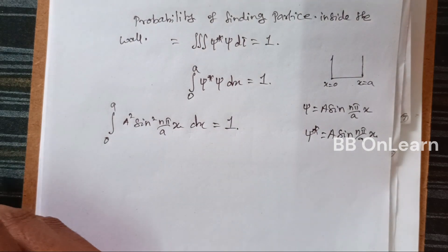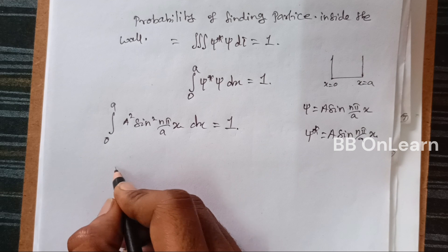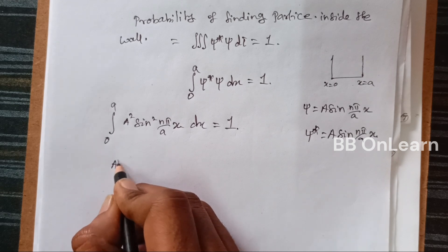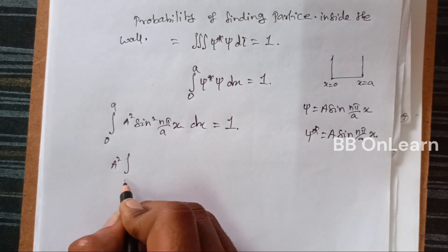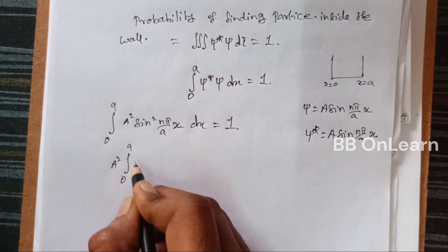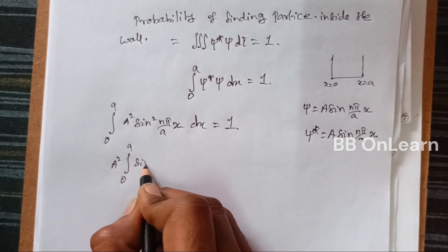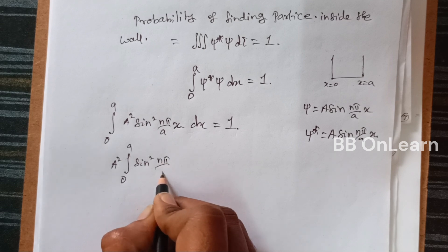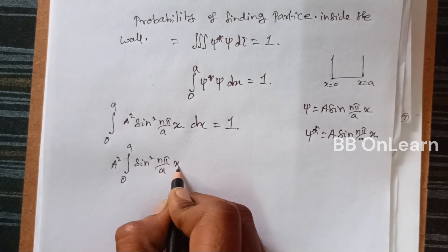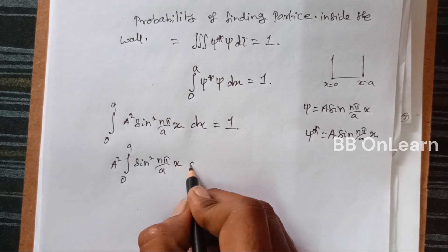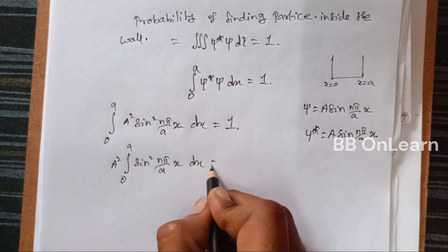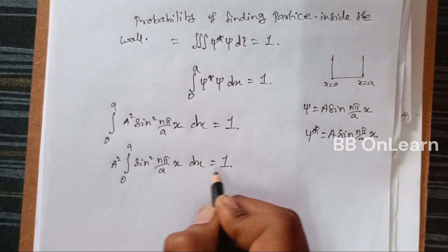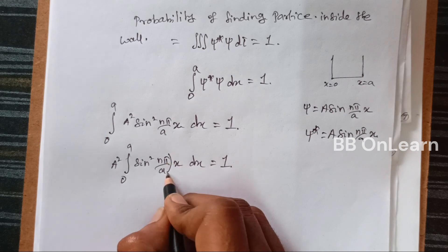So A squared times the integral from 0 to a of sin squared of (nπ/a times x) dx is equal to 1.